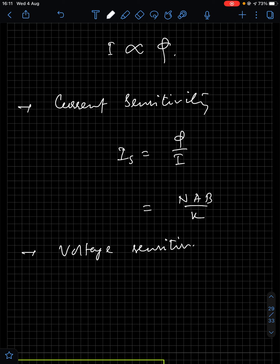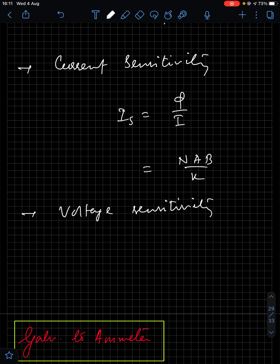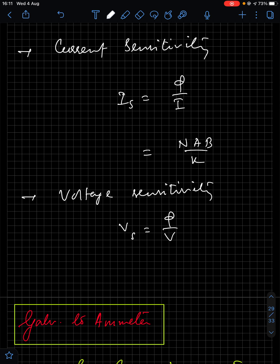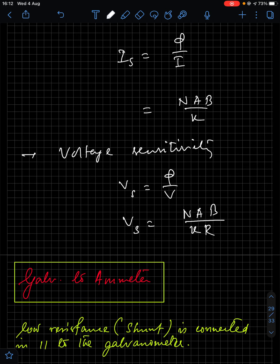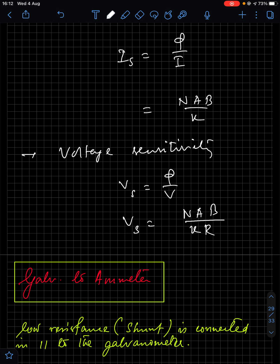Current sensitivity of a galvanometer is defined as deflection per unit current: I_s = φ/I = NAB/K. Voltage sensitivity is the deflection produced per unit voltage: V_s = φ/V = NAB/KR, where R is the resistance of the coil and K is the restoring torque per unit twist.